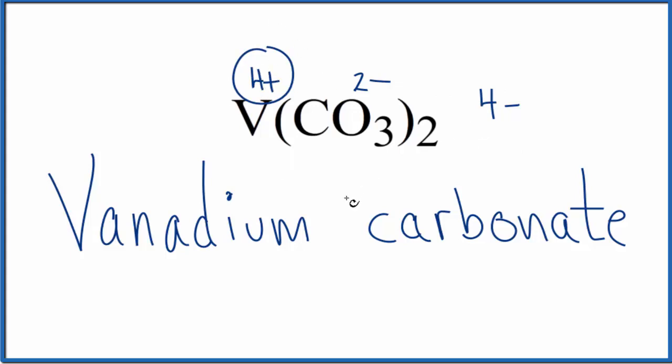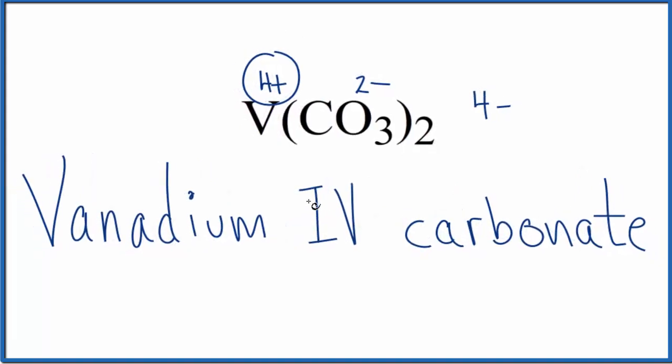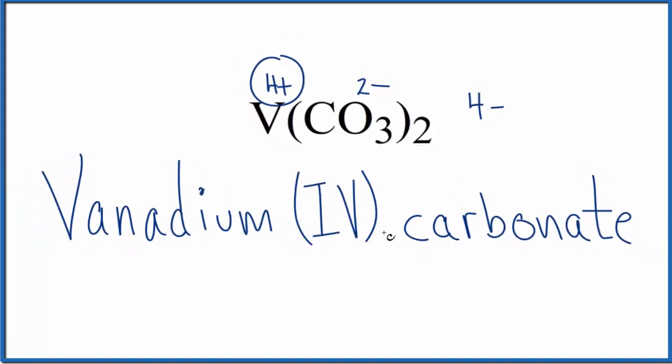So this four plus means we'll write a Roman numeral four between the names, and we put that in parentheses. The name for V(CO₃)₂ is vanadium four carbonate.